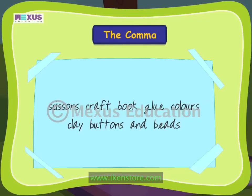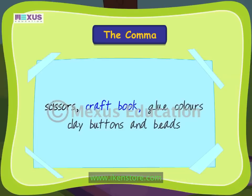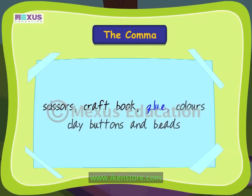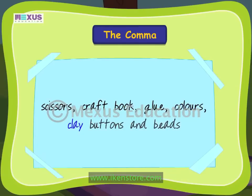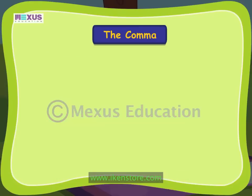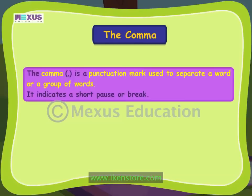Now this sentence is written as: Scissors, craft book, glue, colors, clay, buttons, and beads. So what is a comma? The comma is a punctuation mark commonly used to separate a word or a group of words. It indicates a short pause or break. The comma is used in a number of ways in English writing — commonly to separate a list of words of the same category.